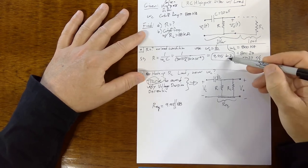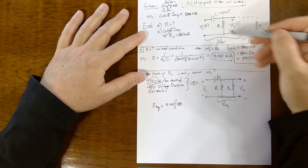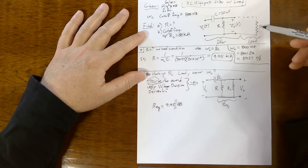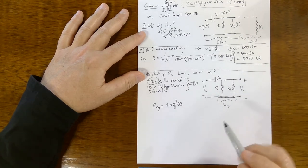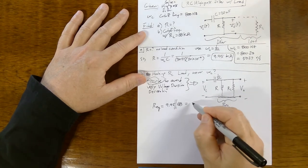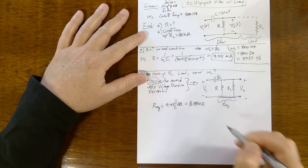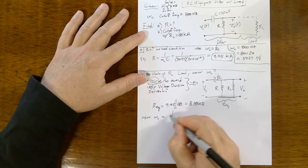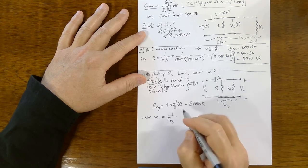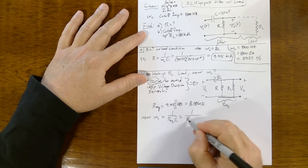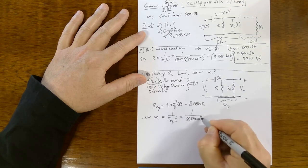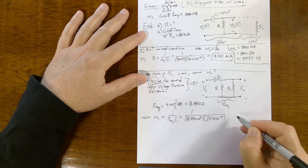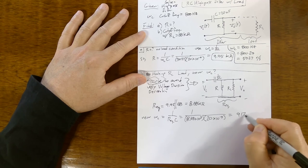So the new omega sub C is going to be 1 over R equivalent C. We calculated the 9.95 R originally, but now we're throwing this 68 kilohm resistor in parallel with that. So the new omega sub C is going to be 1 over 8.68 times 10 to the third over 20 times 10 to the minus 9 capacitance. You end up with 917 Hertz.